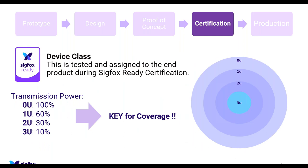During the certification process you receive a class for your end product. The higher the class — with class 0U being the maximum — the higher the radiated power from your device. This is key for good coverage, as the coverage shown by Sigfox is best for class 0 devices. It is therefore important to achieve the best certification class possible.